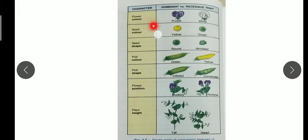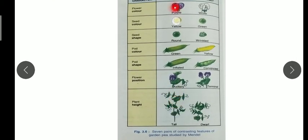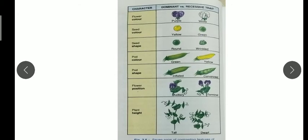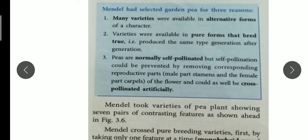As you can see in this picture, based on the characters there are two alternative characters: flower color, seed color, seed shape, pod color, pod shape, and flower position — either axial at the axis of the leaf or terminal when the flower is at the top. Plant height is tall or dwarf. Each character has two forms; the first listed are dominant and the other is recessive. Based on this, Mendel selected the garden pea.